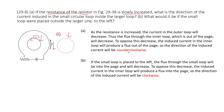So the induced current in the inner small loop is counter-clockwise. Now we look at the smaller loop on the outside of the larger loop. The magnetic field there is pointing in, and it is decreasing. We need to compensate for that, so we take our right hand pointing in, and the four fingers rotate clockwise. This is a simple application of Lenz's law.